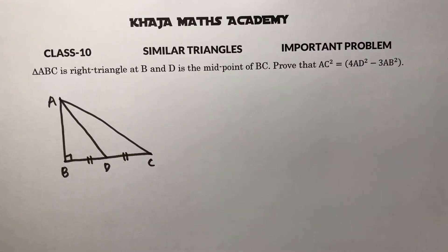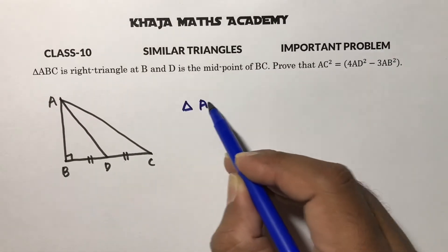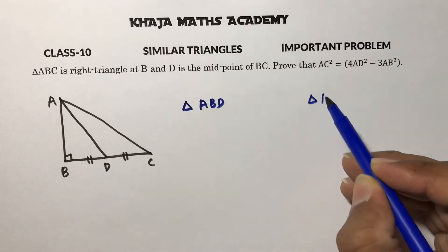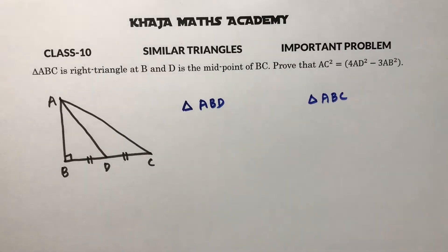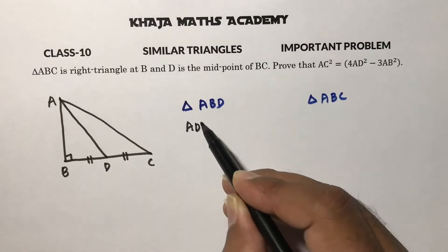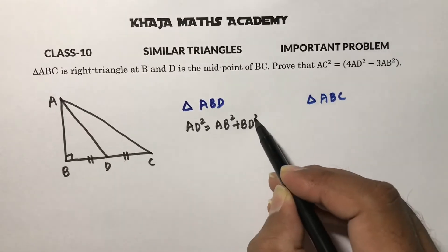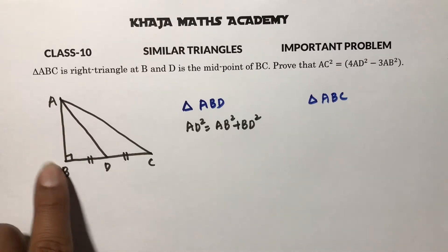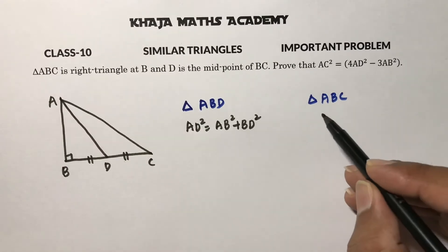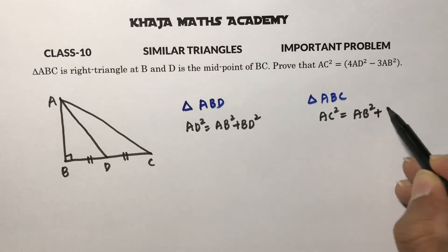There are two right angle triangles here. Apply the Pythagorean theorem for both — first for triangle ABD, then for triangle ABC. For triangle ABD: AD² = AB² + BD².